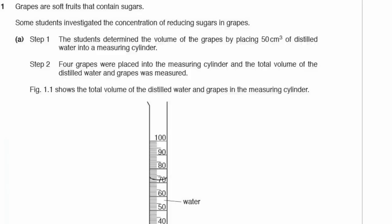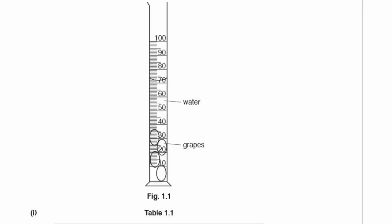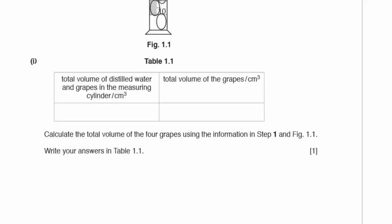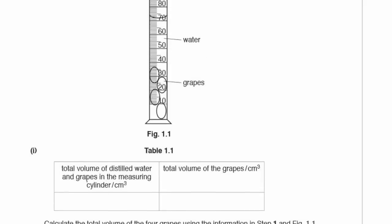Question 1. Grapes are soft fruits that contain sugars. Some students investigated the concentration of reducing sugars in grapes. Step 1: the students determined the volume of the grapes by placing 50 centimeters cubed of distilled water into a measuring cylinder. Step 2: four grapes were placed into the measuring cylinder, and the total volume of the distilled water and grapes was measured. Figure 1.1 shows the total volume.